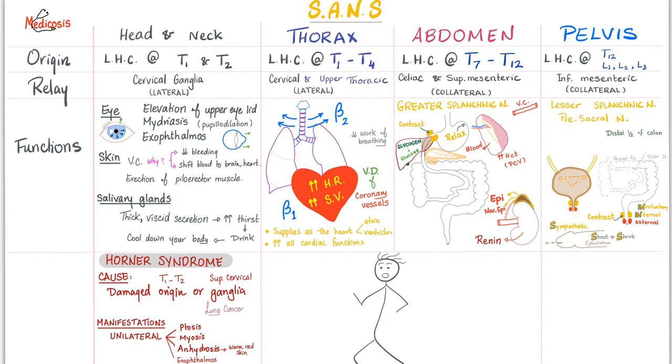What can happen if I have a disease here? It's called Horner syndrome. Horner syndrome could be a problem in the origin, which is lateral horn cell at T1 and T2 spinal segments. Or it could be a problem in the ganglia, which is the cervical ganglia. Namely, the superior cervical ganglia. This can happen in lung cancer, especially if it's a cancer at the apex of your lung. If it's at the apex, it's usually squamous cell carcinoma or small cell carcinoma.